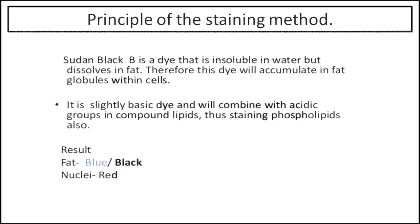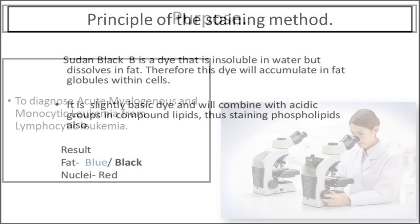The principle of this staining method: Sudan Black B is a fat-soluble dye. The dye accumulates in fat globules within the cells. It is a slightly basic dye and therefore combines with acidic compartments of compound lipids. As a result, phospholipids are also stained.